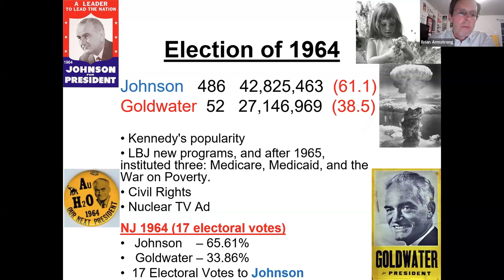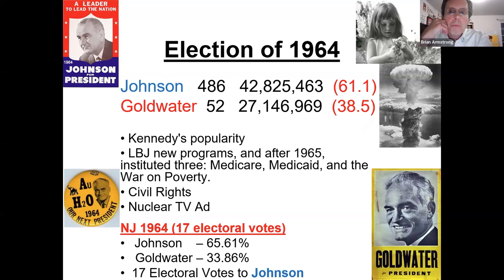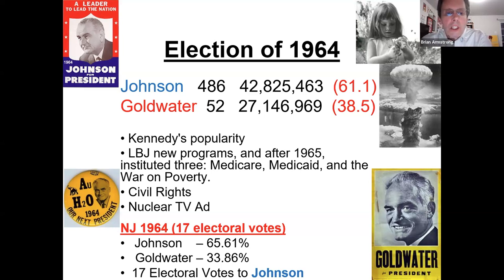One of the key things with the Goldwater campaign was what they called the nuclear TV ad — a little girl picking petals off a flower with a countdown in the background, ending in a mushroom cloud. It said basically your vote depends on voting for Johnson, because they were saying Goldwater was going to introduce nuclear weapons into Vietnam and other war zones. In 1962, just two years before, we'd had the Cuban Missile Crisis where everybody thought nuclear war with Russia was coming, so there was a lot of fear. New Jersey went soundly for Johnson — 65%.